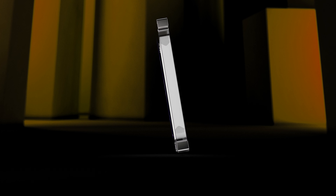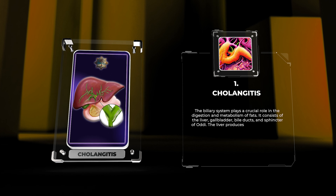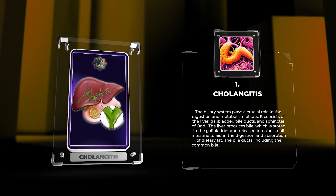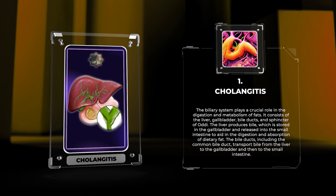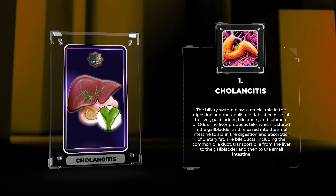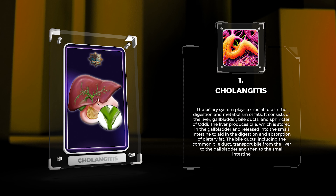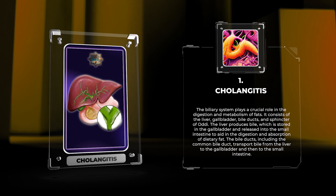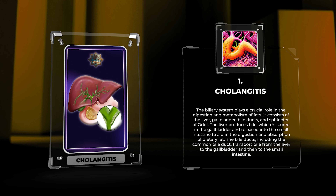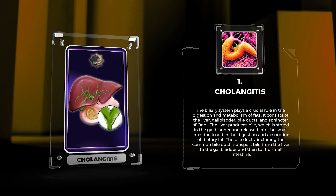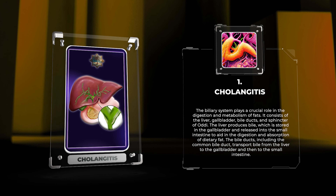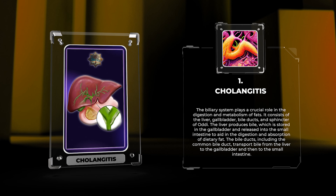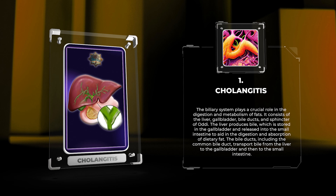The biliary system plays a crucial role in the digestion and metabolism of fats. It consists of the liver, gallbladder, bile ducts, and sphincter of Oddi. The liver produces bile, which is stored in the gallbladder and released into the small intestine to aid in the digestion and absorption of dietary fat. The bile ducts, including the common bile duct, transport bile from the liver to the gallbladder and then to the small intestine.